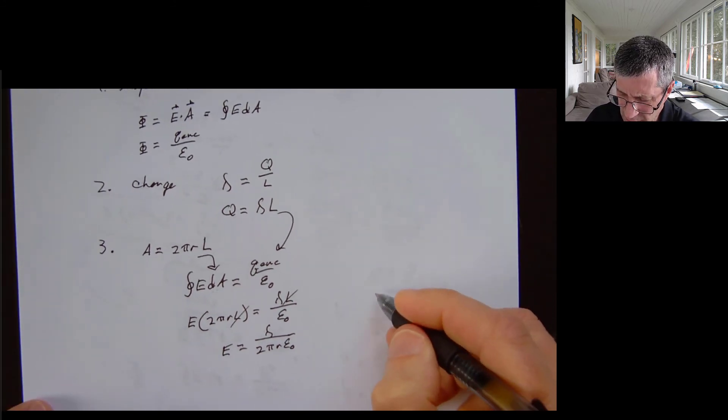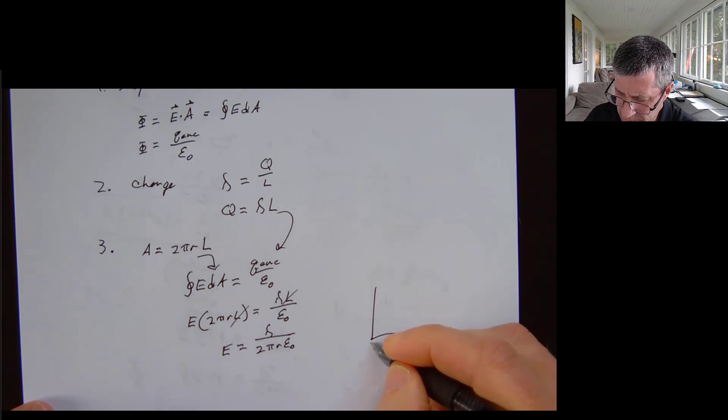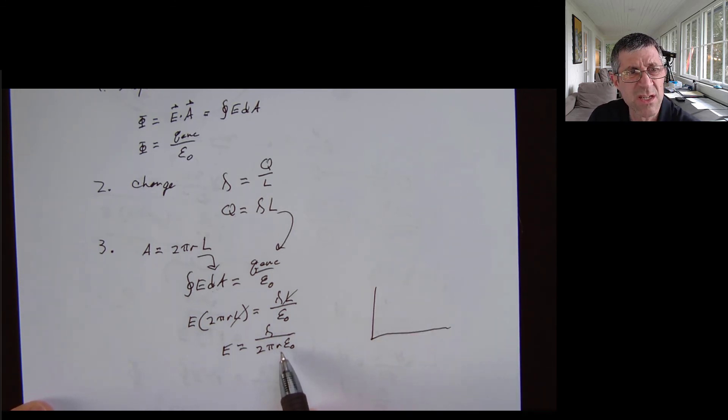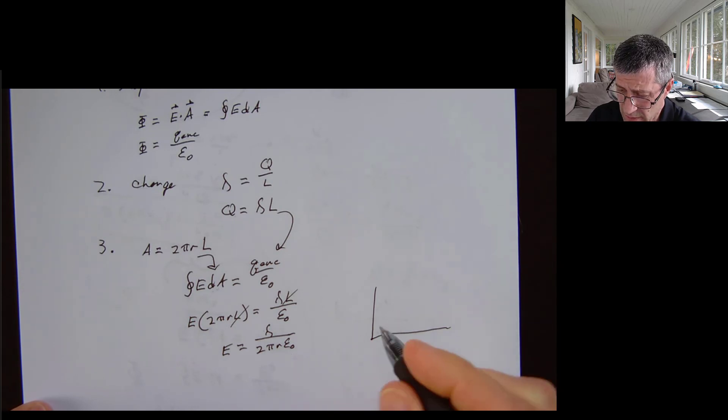So if I was to plot this, I would say, as I get further away, that I'm going to drop off at the inverse of the distance. So I'm going to have an inverse shape.